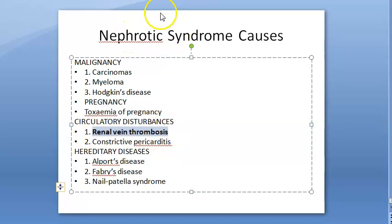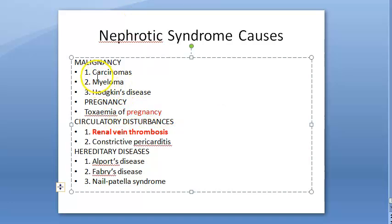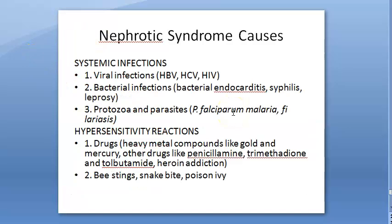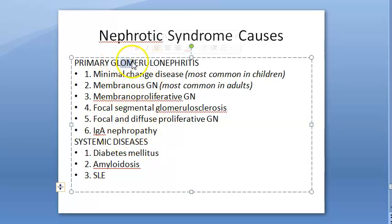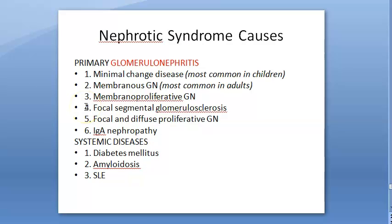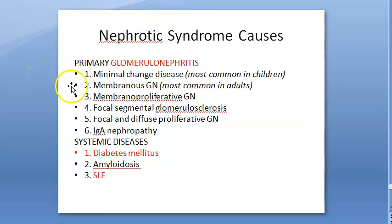Renal vein thrombosis directly affects the kidney so it can't work properly. In pregnancy, carcinomas, viral/bacterial/parasitic infections, drug hypersensitivity, glomerular nephritis — all cause the kidney to not function properly. Glomerular nephritis leads to nephrotic syndrome. Systemic lupus erythematosus is also a cause for nephrotic syndrome.